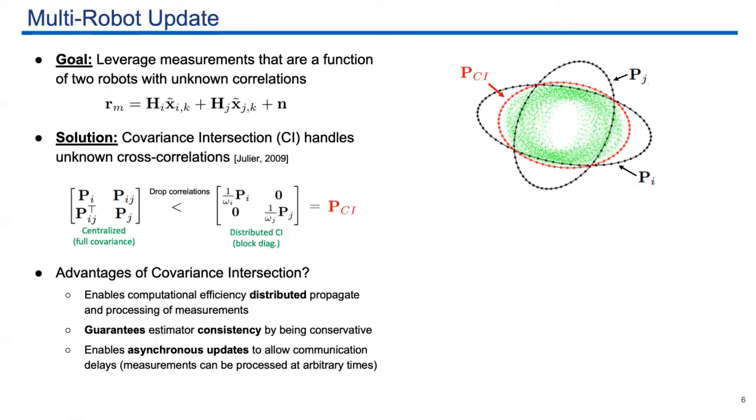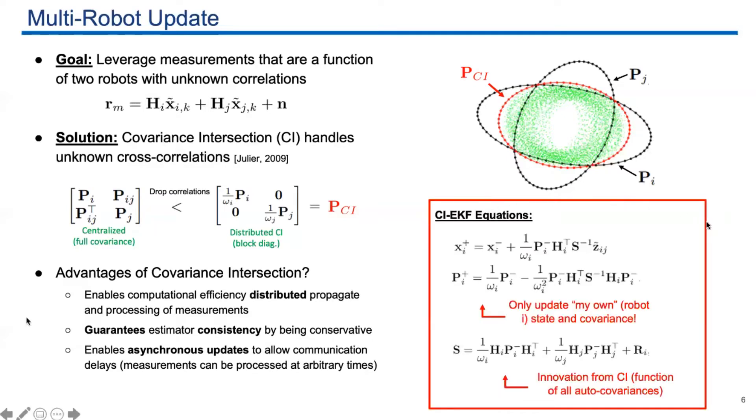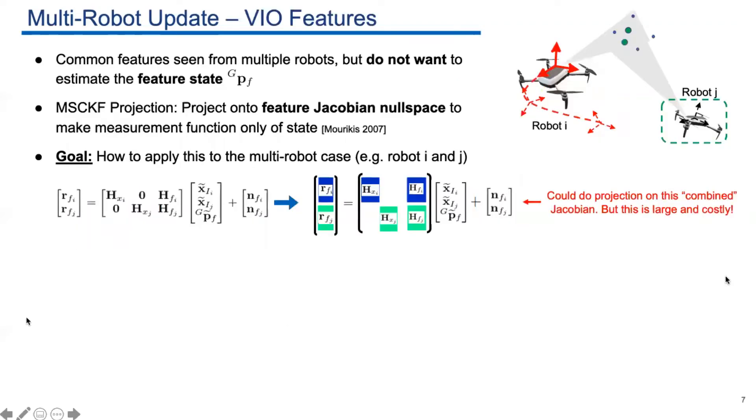So the advantage here is that first it can be consistent, and then it enables computationally efficient distributed propagation and updates. Because of this, we can update the system asynchronously easily. We introduce the CI-EKF updates. So each robot will update its own state and covariance using these two equations. Next, we discuss how we update different kinds of common features.